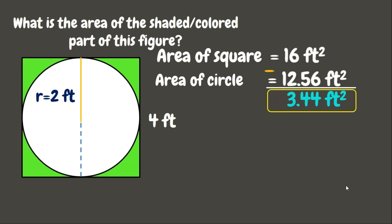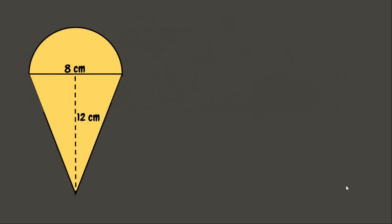Now let's move on to our last example. Here the figure is already divided into two basic shapes: a semicircle and a triangle. Let's first get the area of the triangle.